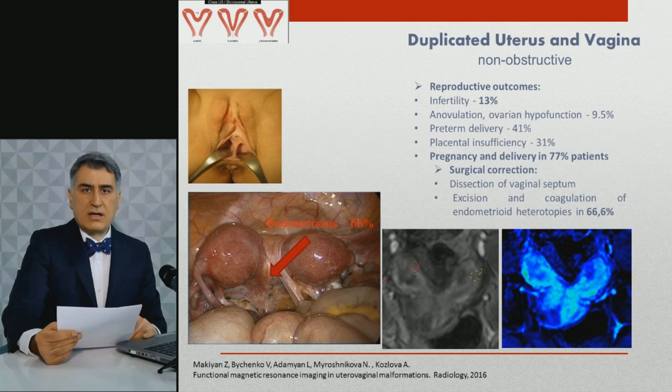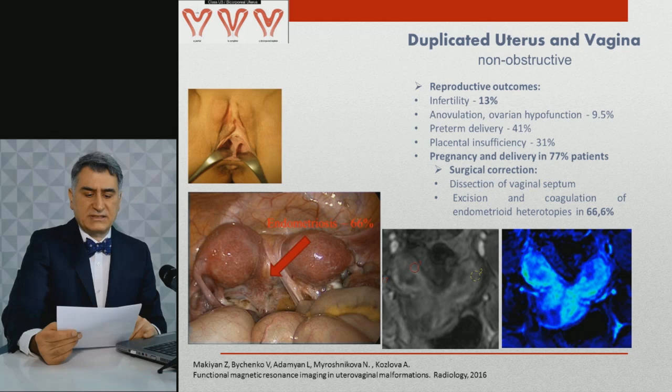For estimation of myometrial blood perfusion, we employed the new method of functional MRI using intravenous injection of gadolinium contrast. Dynamic monitoring of serial images evaluates blood perfusion by digital diagram and color mapping. Asymmetric perfusion of the duplicated uterus was detected in some cases by functional MRI, which might be important when considering IVF and embryo transfer.